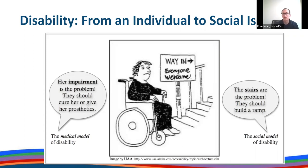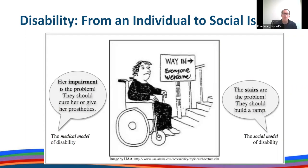On the screen, we have an image of an individual who uses a wheelchair at the bottom of a set of stairs. There's a sign that reads 'Way In — Everyone Welcome.' Well, for this person, this may not be a welcoming or accessible entrance. On the left-hand side, a thought bubble reads: 'Her impairment is the problem — they should cure her or give her prosthetics.' This reflects the medical model of disability, where when we encounter an issue between a person and society, we think the problem belongs to the person — the person needs to change in order to participate. But on the right-hand side, the thought bubble reads: 'The stairs are the problem — they should build a ramp.' This reflects the social model of disability, where instead of only changing the person, we think about how to remove the barrier — in this case, the stairs — by providing a ramp, in order to allow the person to participate fully in society.